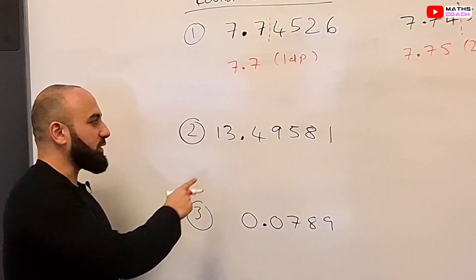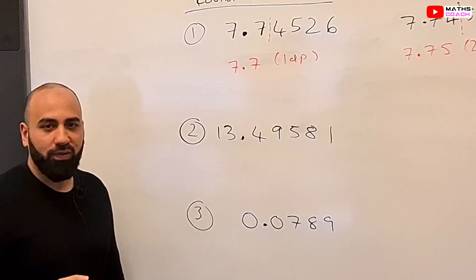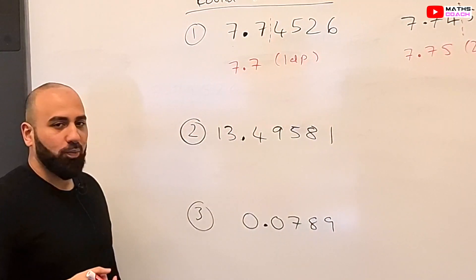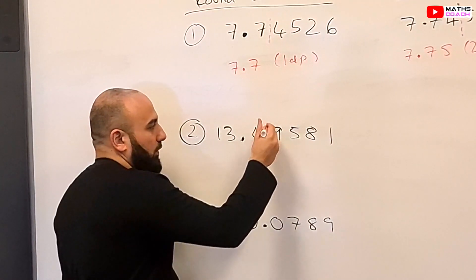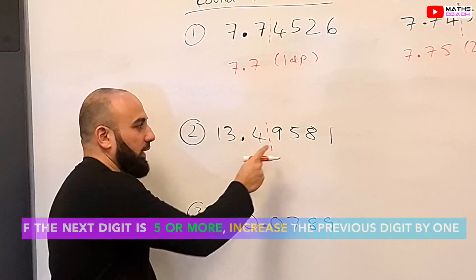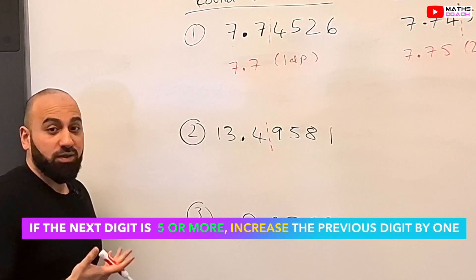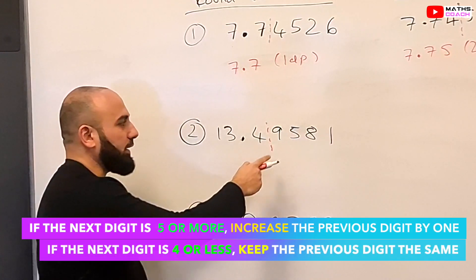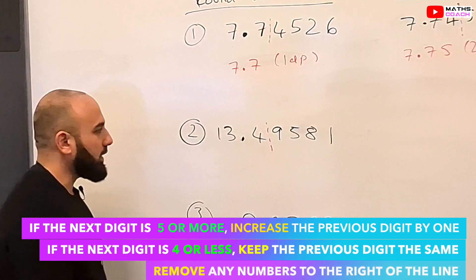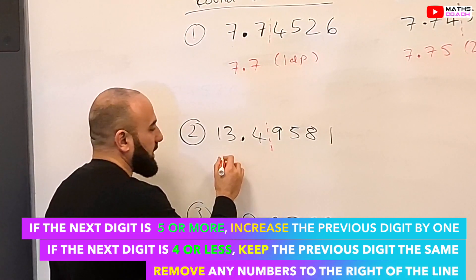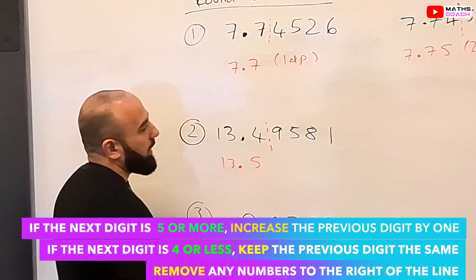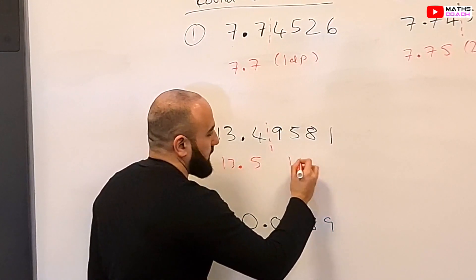Now we're going to look at the second question. The number is 13.49581 and we're going to round this to one decimal place. We draw a line after the 4 and we look at the number next to it. It's 5 and above — it's a 9. Therefore we need to increase this number to a 5, so our answer is 13.5 to one decimal place.